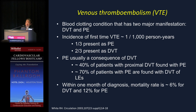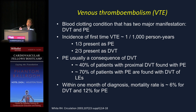Venous thromboembolism, VTE, is a blood clotting condition that has two major manifestations: DVT and PE. The incidence of first-time VTE is about 1 in 1,000 persons per year. About one-third present as PE, and about two-thirds present as DVT. PE is usually a consequence of DVT — 40% of patients with proximal DVT are found to have a PE, and about 70% with a PE are found to have a DVT.